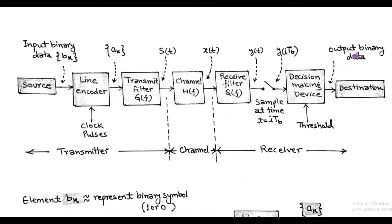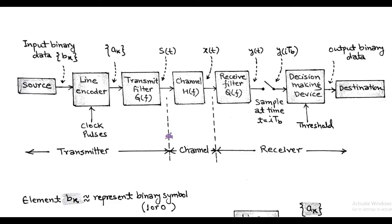That is called binary output data. In this system, the blocks such as source, line encoder, and transmit filter G(f) correspond to the transmitter part. And the receive filter Q(f), sampler, and decision making device constitute the receiver part.